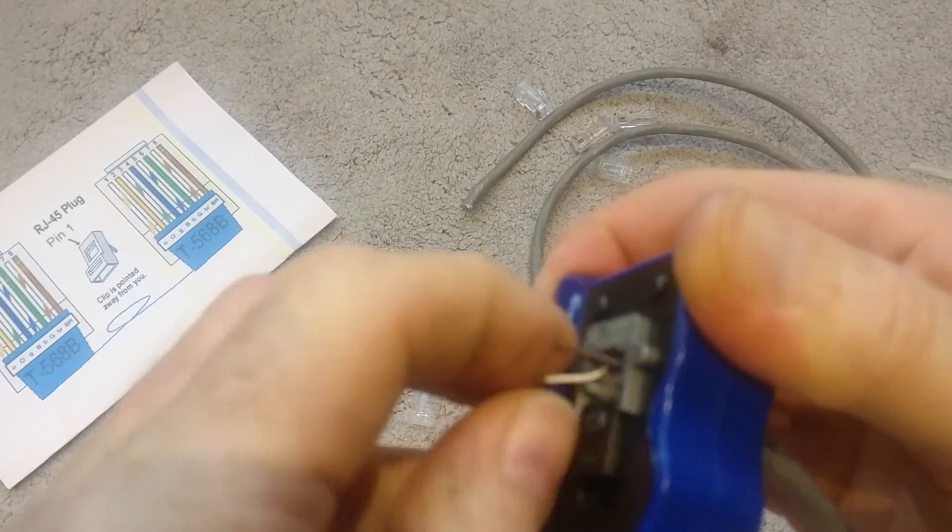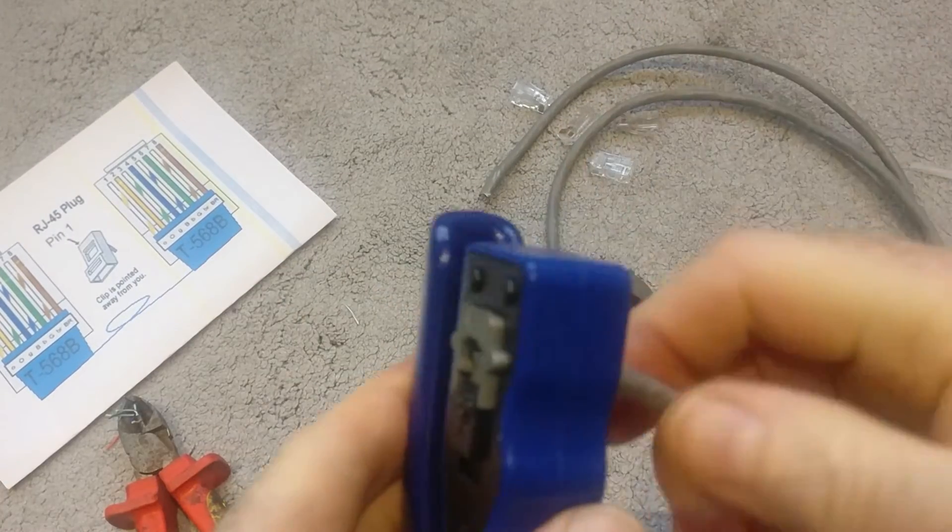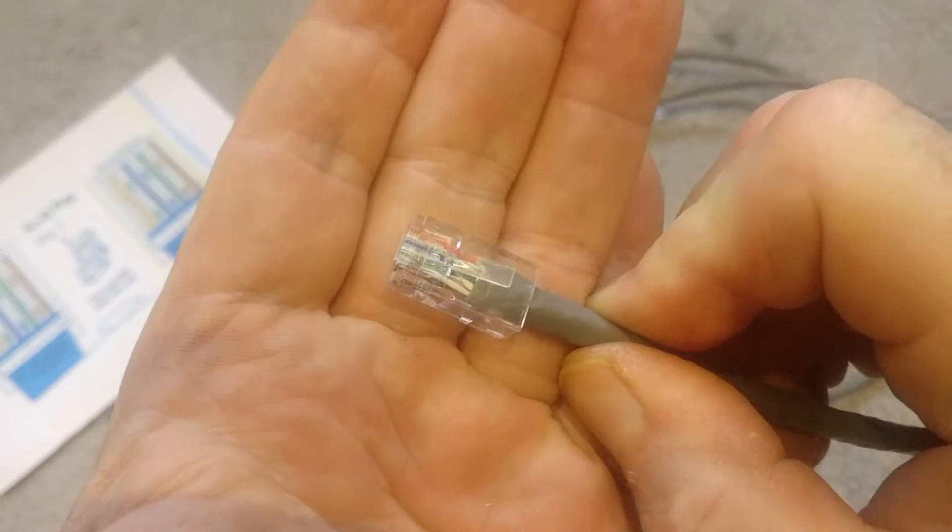Take that last one off, undo it, take it off. There we are, you've got yourself a really neat RJ45 ethernet cable that's been terminated on there, really secure.